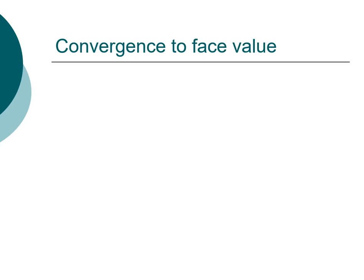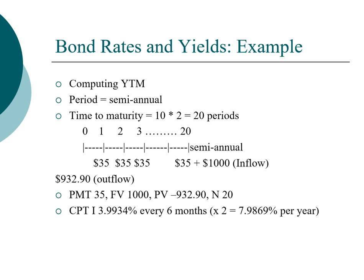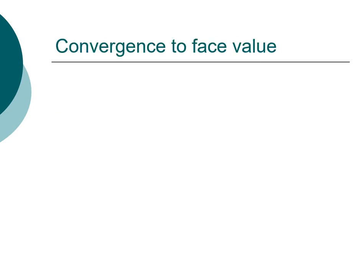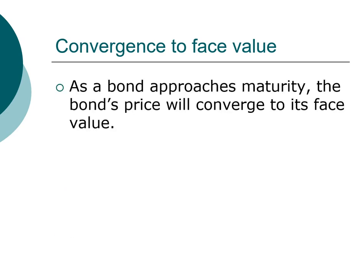Now that you understand how to compute bond value as well as bond yield and return, let's take a look at how bond prices change over time. The first example we're going to go over is to look at how bond price changes simply due to the elapse of time. One of the bond theories says that as a bond approaches maturity, the bond price will converge to its base value.